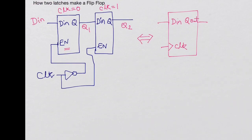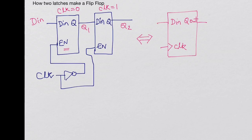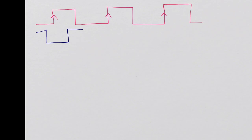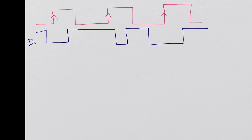Let us first look at some timing diagrams. Let me draw an input enable, or a clock. I will look at three rising edges of the clock — these are the three rising edges 1, 2, and 3. Now this is the DN that I am going to supply to that circuit. I have chosen DN such that it looks like this, and this is the clock.